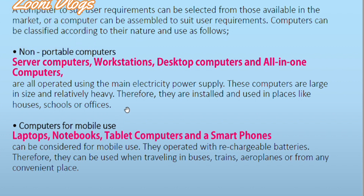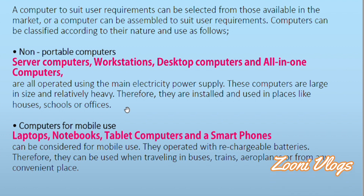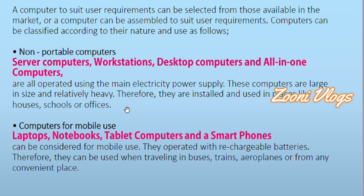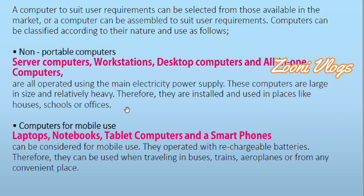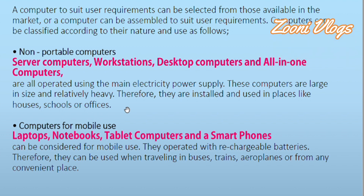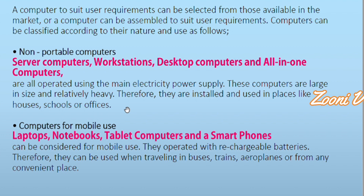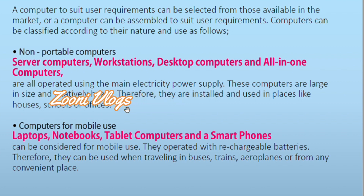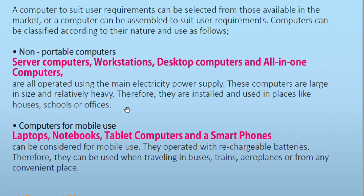Computers for mobile use include laptops, notebooks, tablet computers, and smartphones. These can be considered for personal, mobile use — they operate with rechargeable batteries. Therefore they can be used when traveling in buses, trains, aeroplanes, or from any convenient place. So there are two main parts: non-portable computers and computers for mobile use.